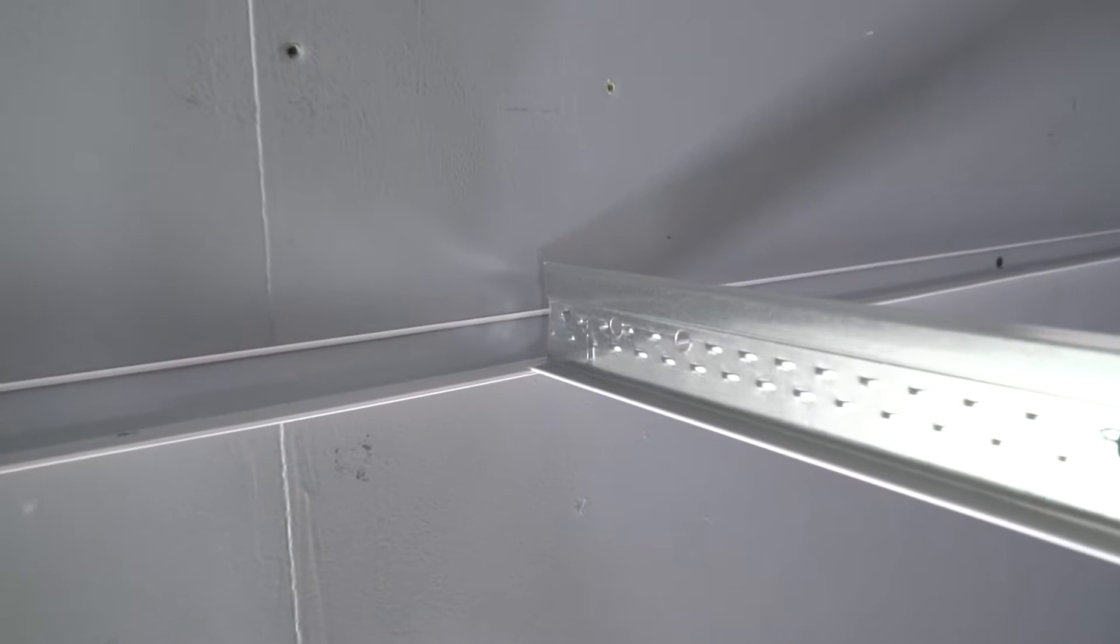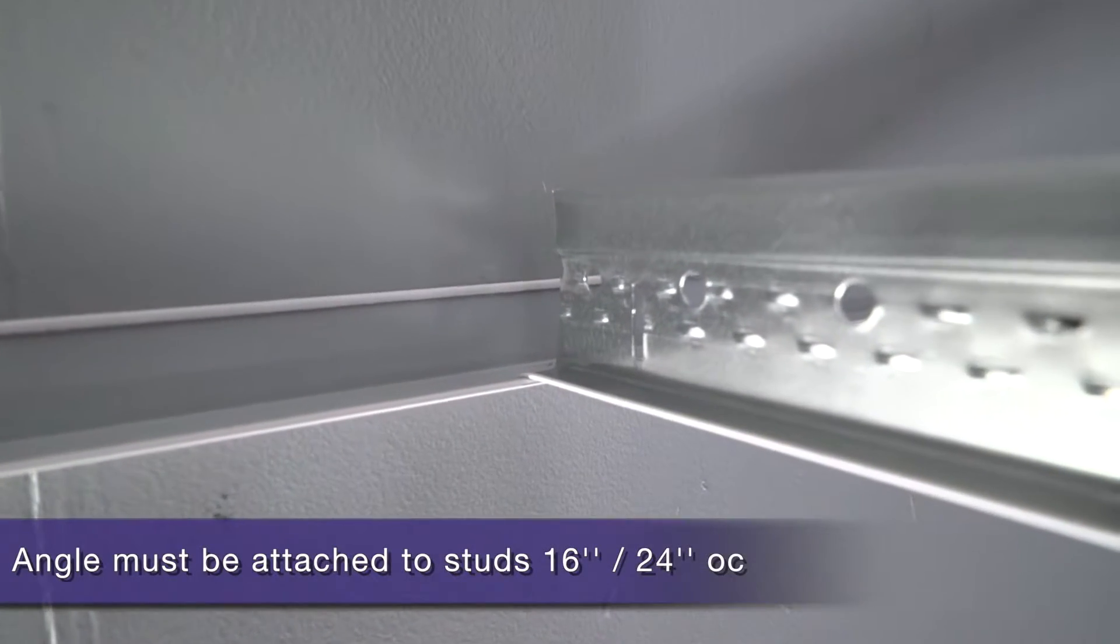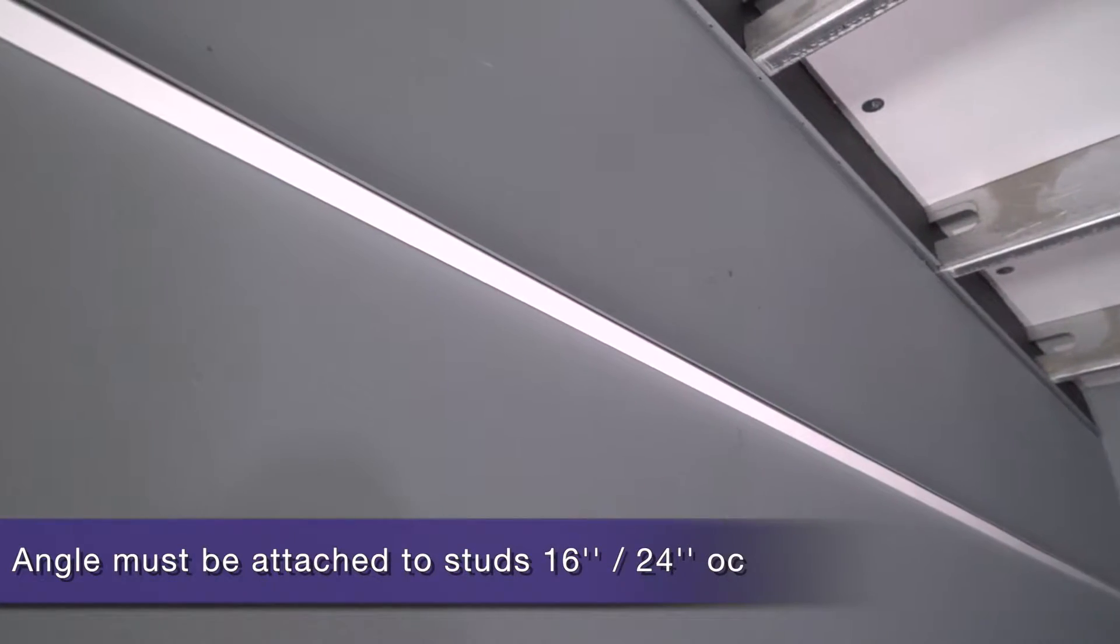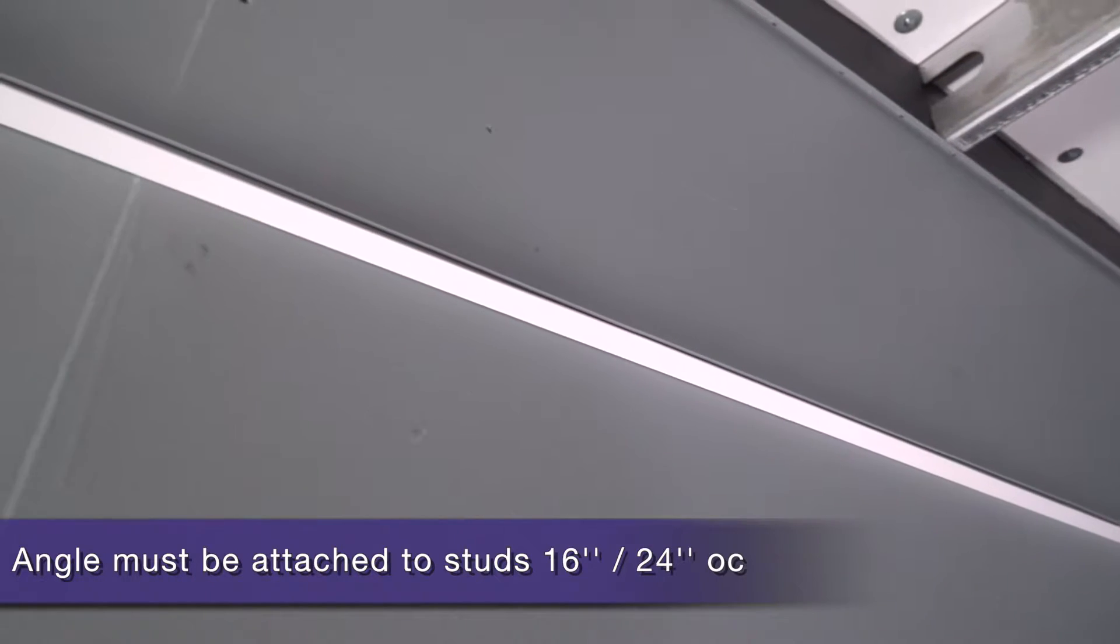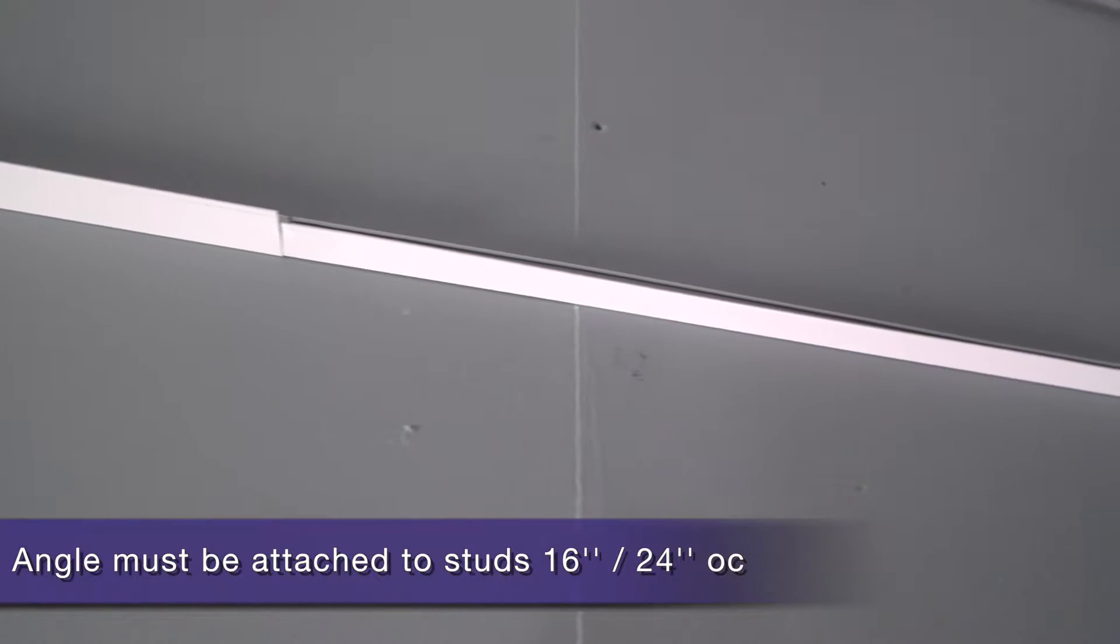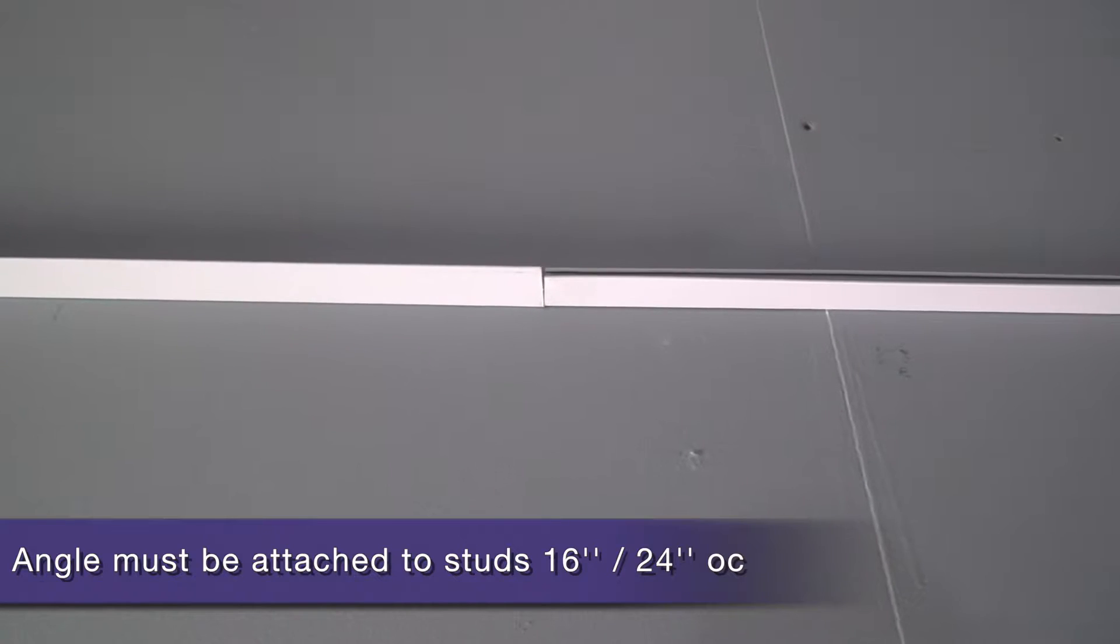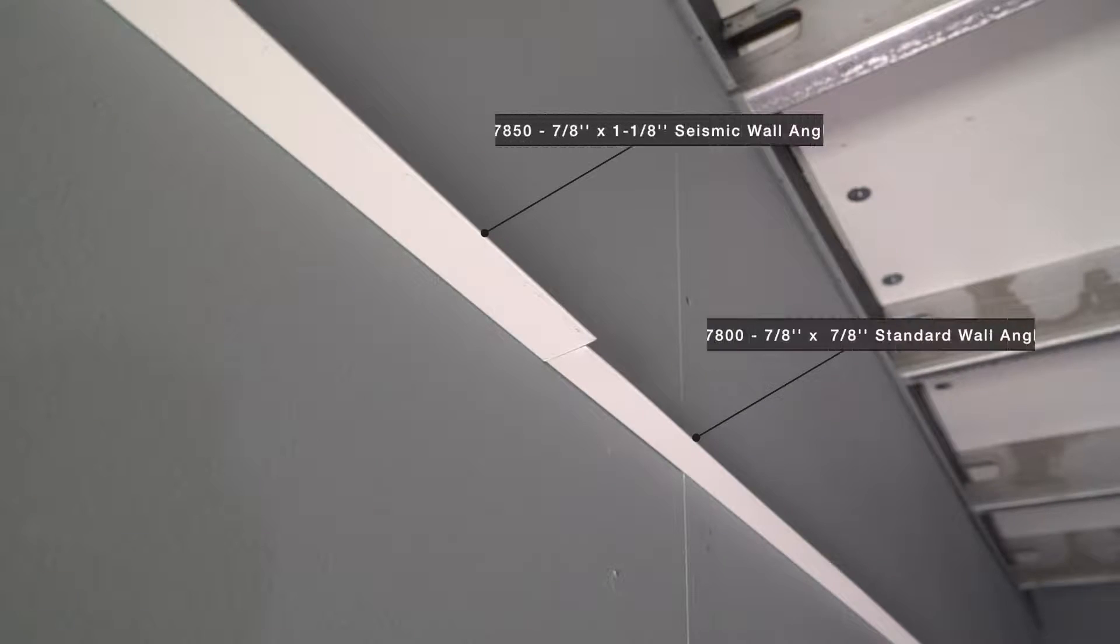Instead of installing 2-inch wall molding, let's follow Seismic RX guidelines and install standard 7/8-inch wall molding by attaching to studs on 16 or 24-inch centers. But wait! Why are there two angle widths here?